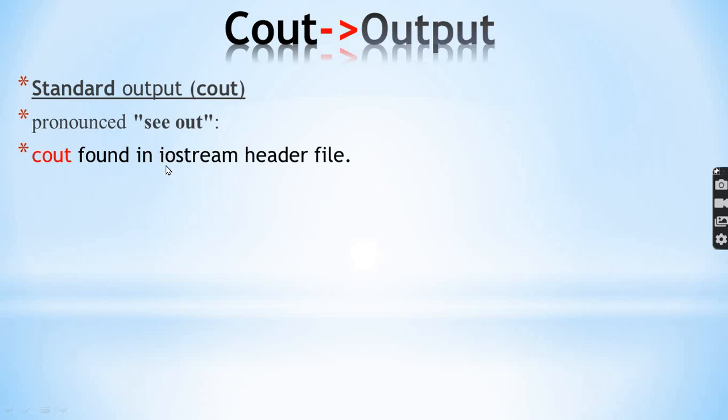Iostream stands for input output stream. This is the output operation display by using Cout.